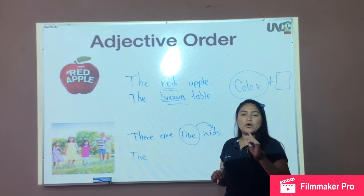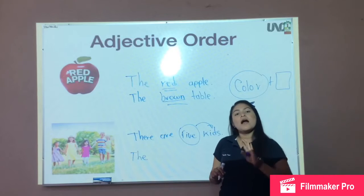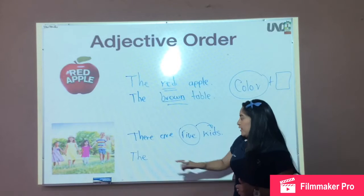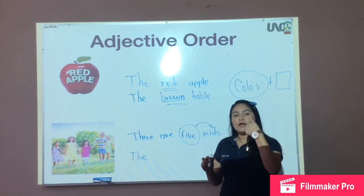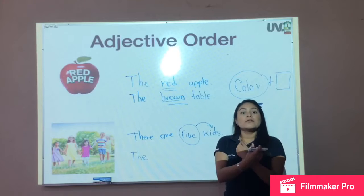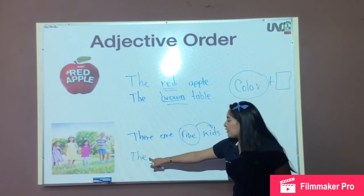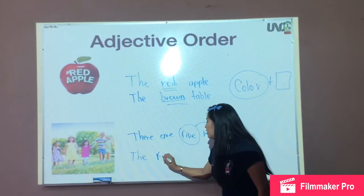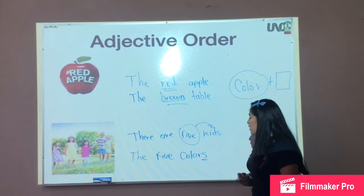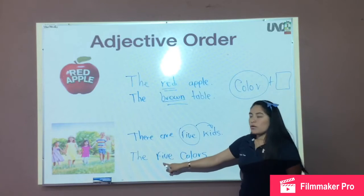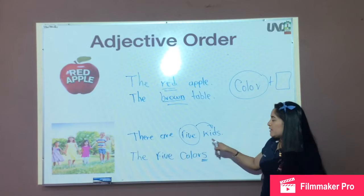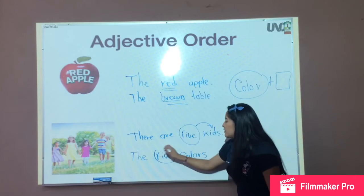Los cinco colores. How do you say los cinco colores in English? We are going to write numbers or colors. Which do we write first? The number. Five colors. Remember? Plural — yes, because we are talking about five. There are five kids, the five colors.